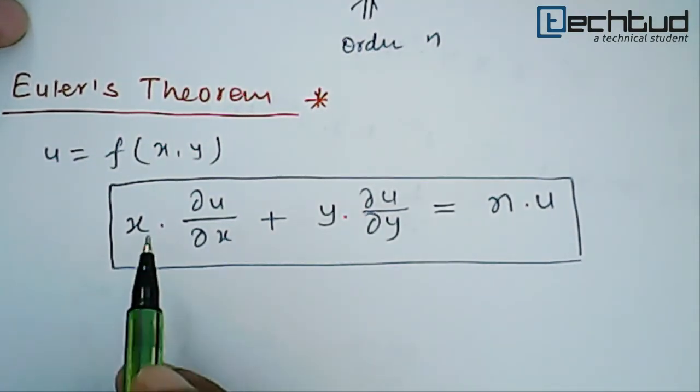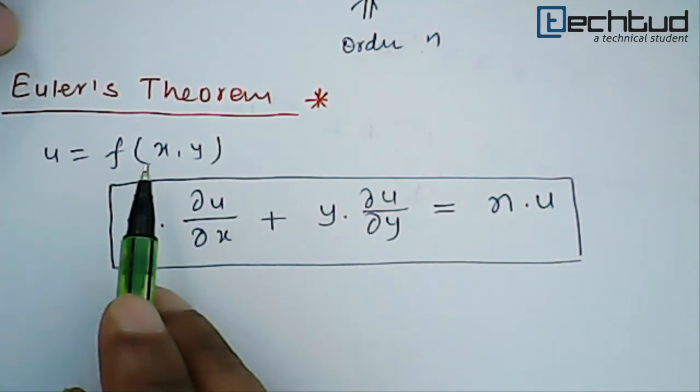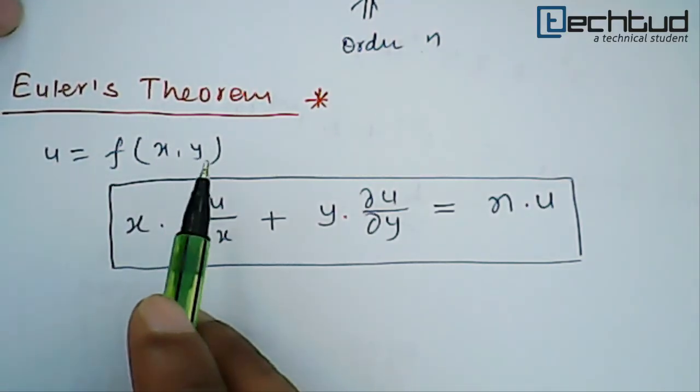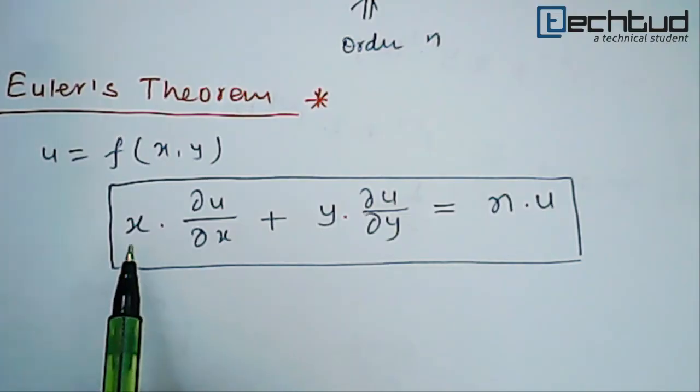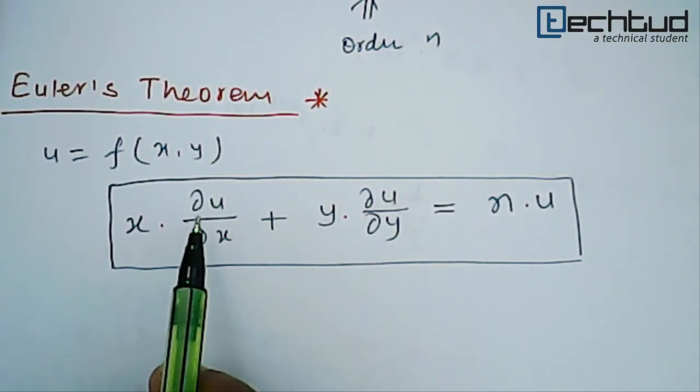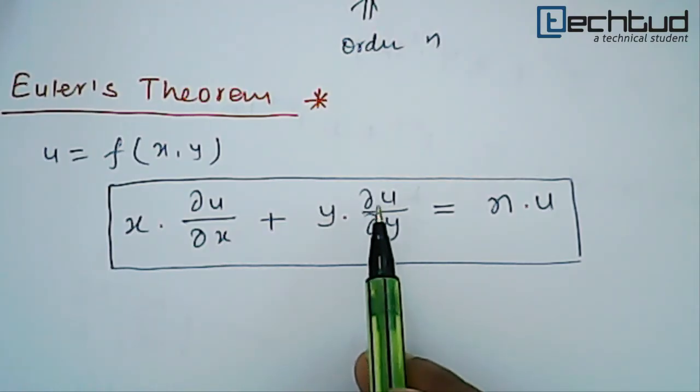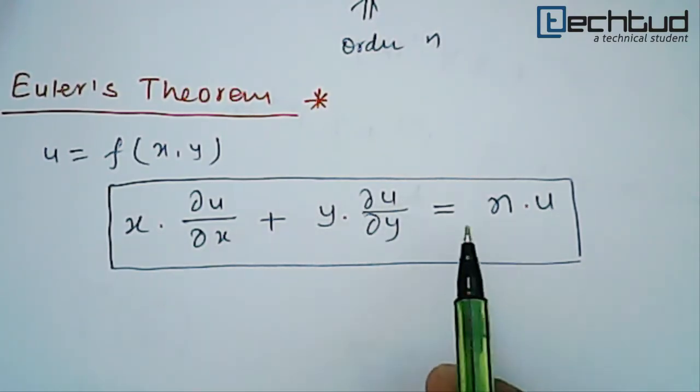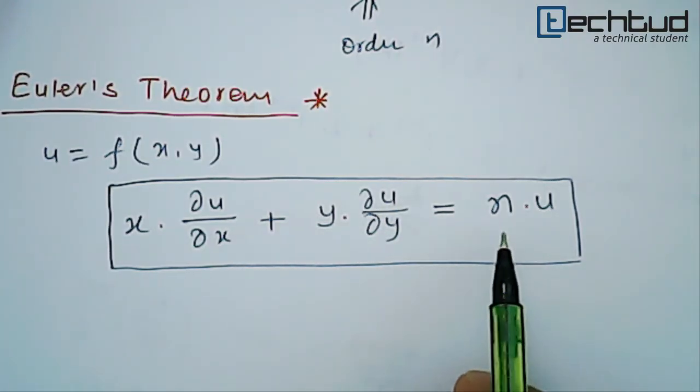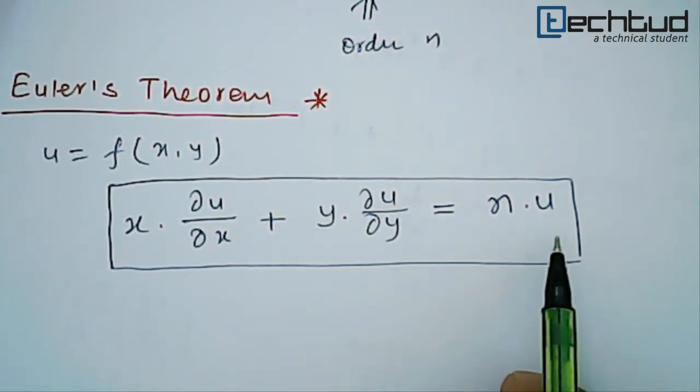It is saying that for a function of two independent variables x and y, if we multiply x with the partial differentiation of that function with respect to x, plus y times the partial differentiation of the function with respect to y, it will be equal to the degree - that is the homogeneous order n - times the function itself.